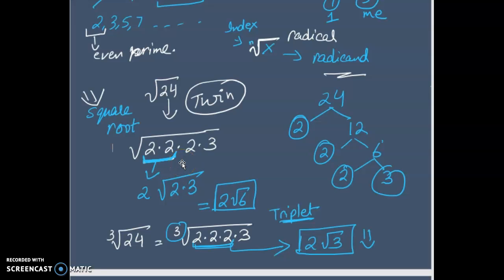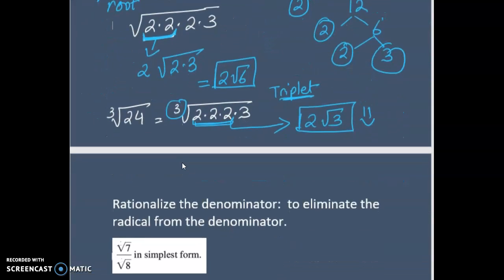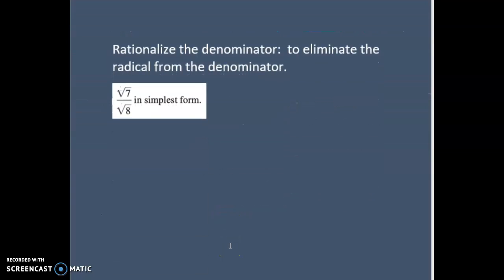Now let's understand some important things about radicals. Another thing is rationalizing. What is rationalizing? Rationalizing is nothing but eliminating the radical from the denominator because in mathematics, we don't like radicals in the denominator. So how to get rid of it?